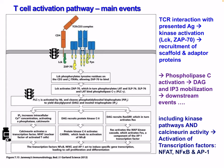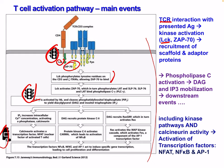In summary, the T cell activation pathway: T cell interaction with presented immunoantigen causes kinase activation — LCK and ZAP70. These cause the recruitment of scaffold and adaptor proteins, then phospholipase C gamma activation, which results in diacylglycerol and IP3 mobilization. These result in downstream events including kinase pathways and calcineurin activity and the activation of transcription factors NFAT, NF-κB, and AP1.